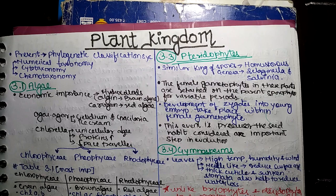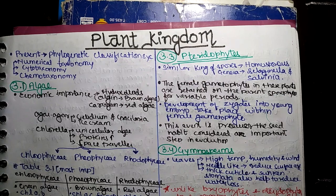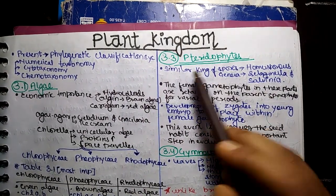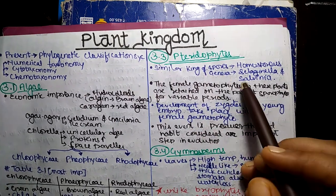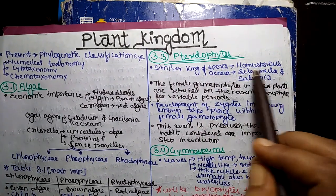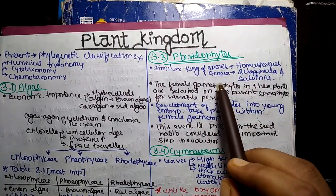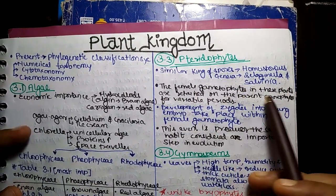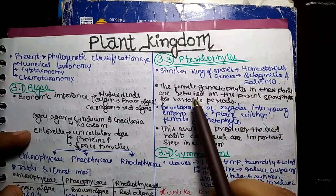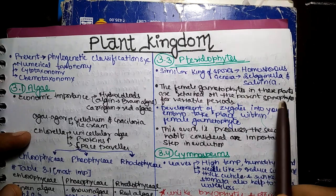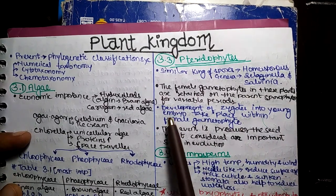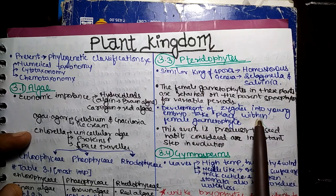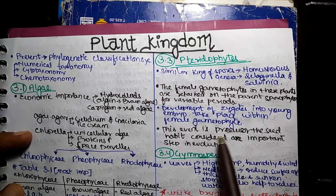Next is Pteridophytes. Pteridophytes have similar kinds of spores — if there are similar spores, it is called homosporous. Selaginella, Isoetes, and Salvinia — the female gametophyte in these plants is retained on the parent sporophyte for variable periods.